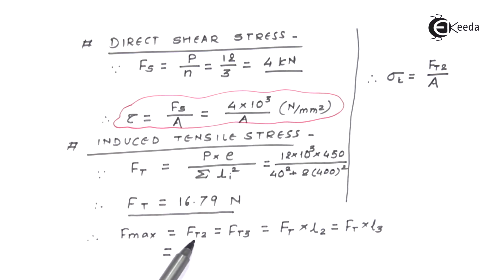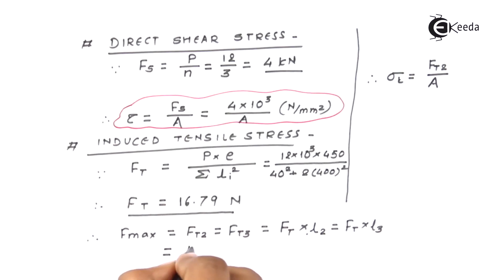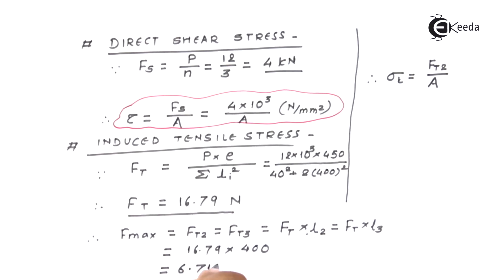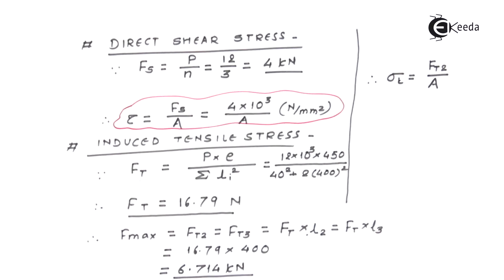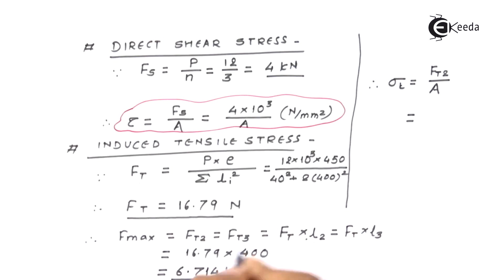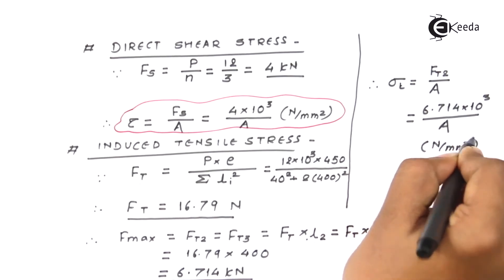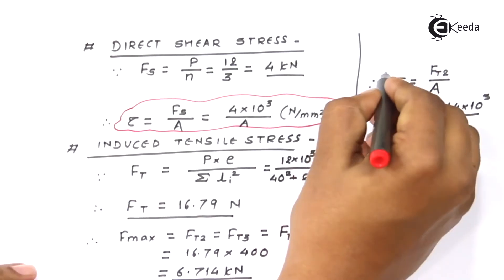The tensile force on the second and third bolt is given by multiplying the Ft value by length 2 or length 3. As we evaluate this, we get 6.714 kilonewton — that is the amount of force acting on the second and third bolt, which is the maximum force. The tensile stress is then given by this maximum force divided by area A.